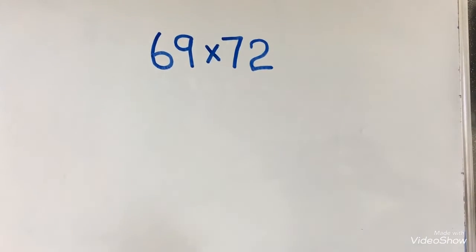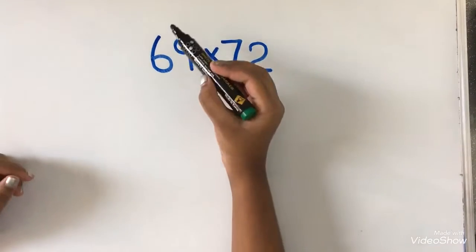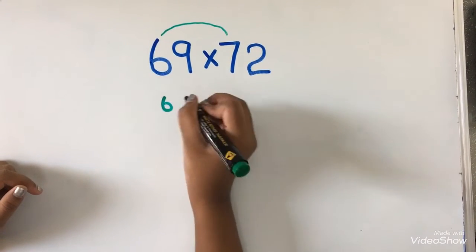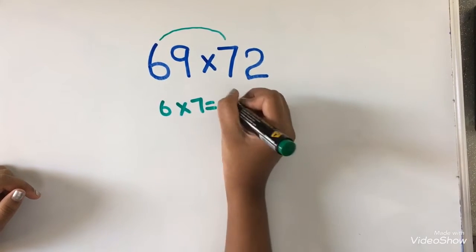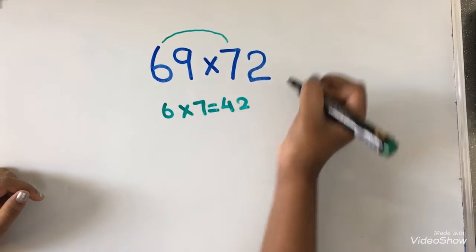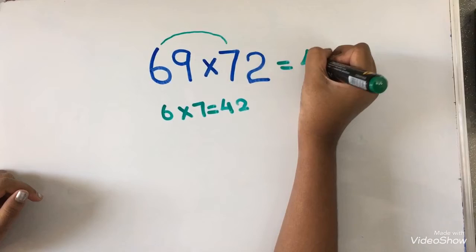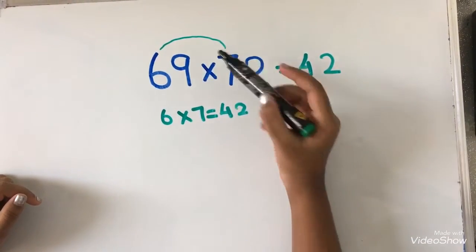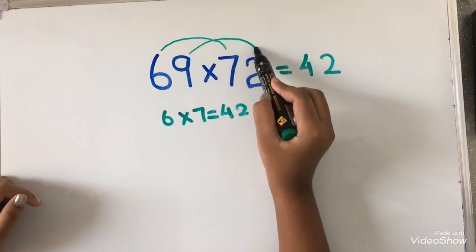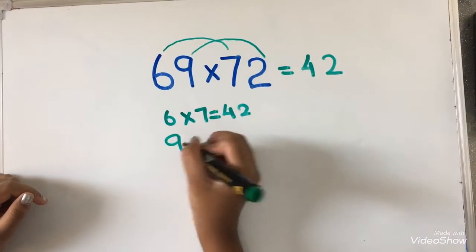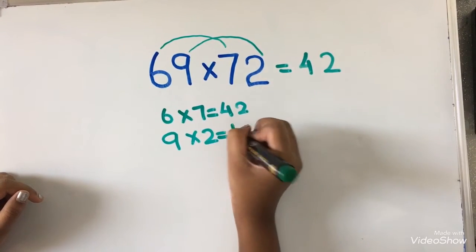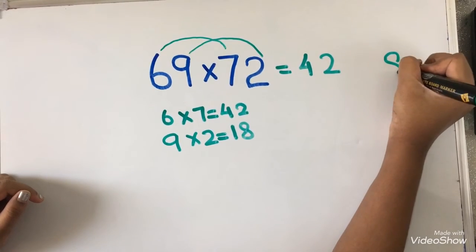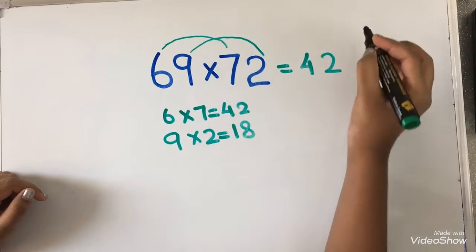Now, we are going to multiply 6 into 7. 6 into 7 equals to 42. I am going to write 42 over here. Now, I am going to multiply 9 into 2. 9 into 2 equals to 18. I am going to put this 8 over here. And 1 as a carry over.